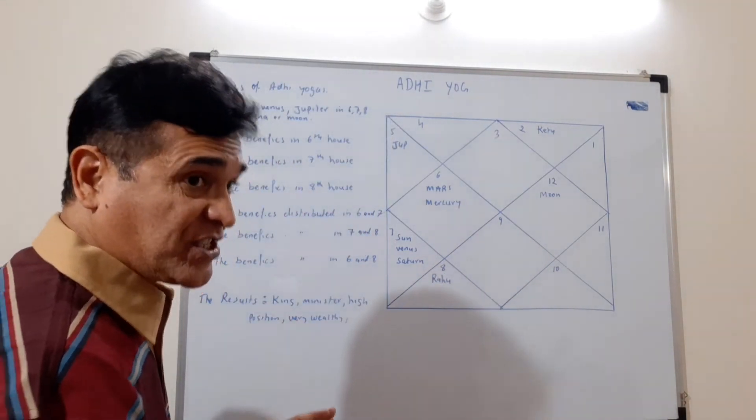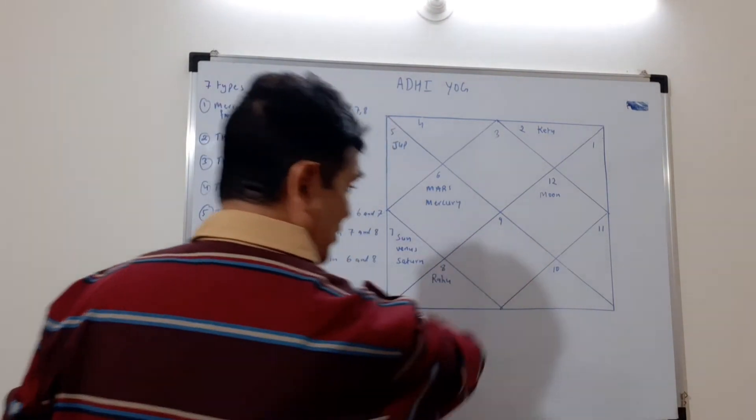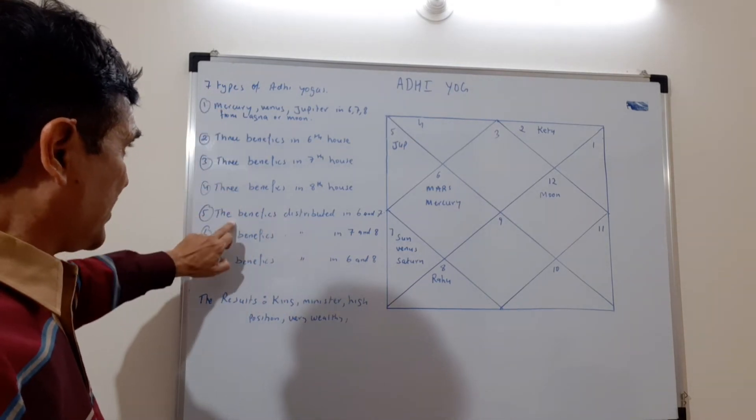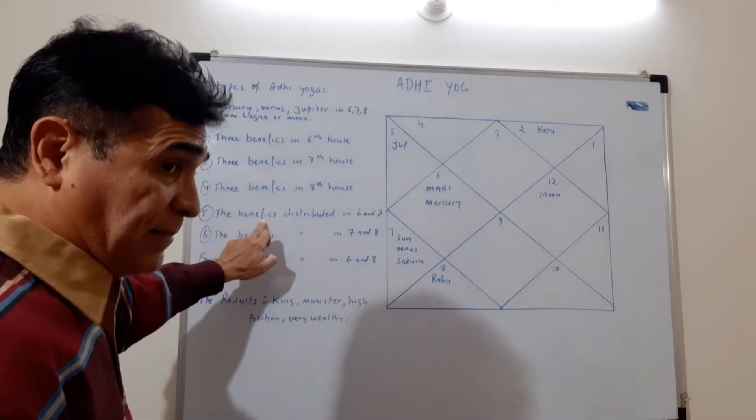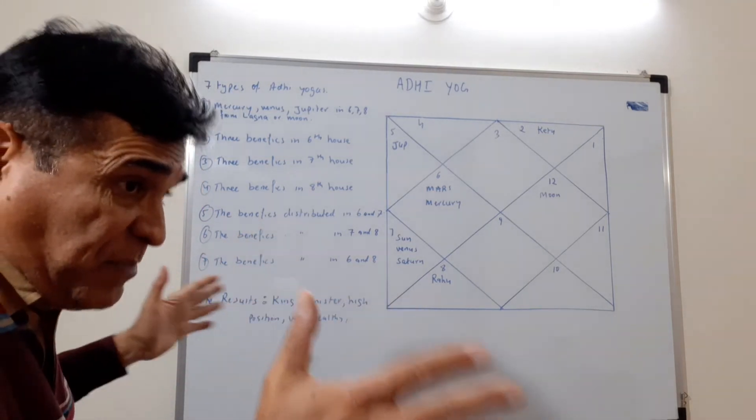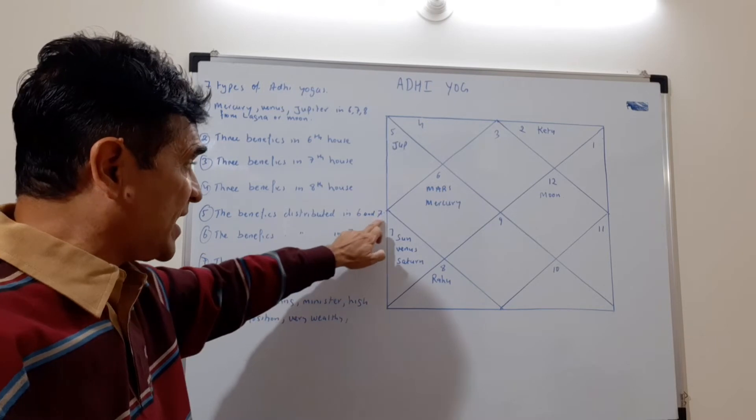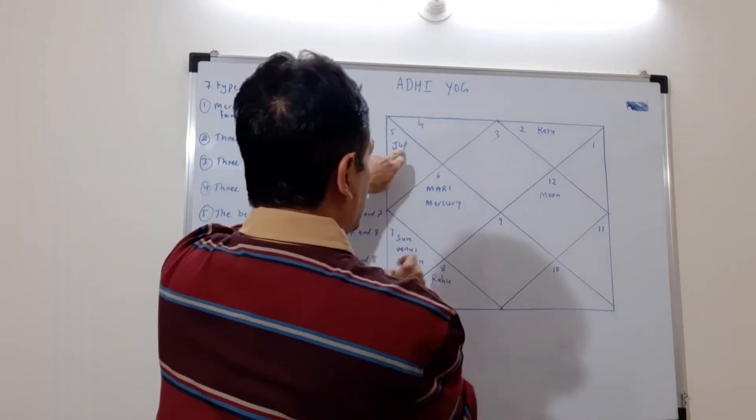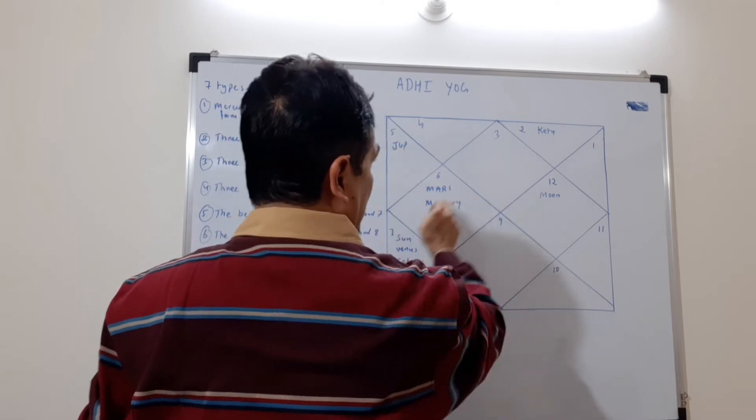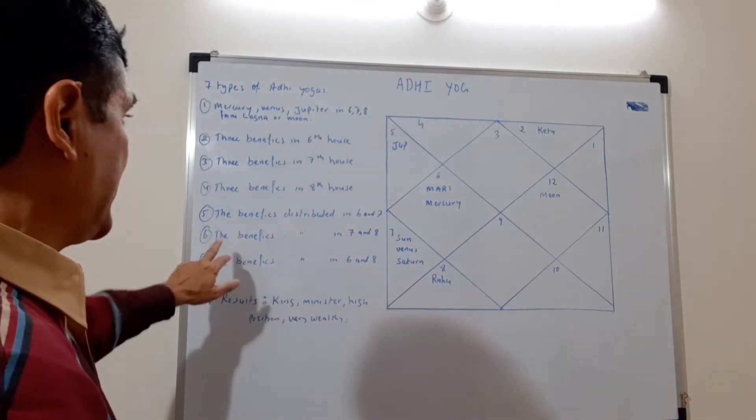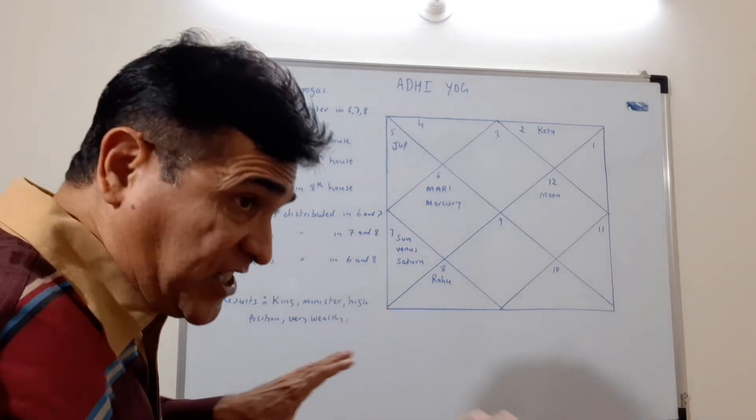The fifth one is where the benefic planets are distributed between the sixth and the seventh house. The sixth type is benefics distributed between seventh and eighth. Moon is here, Lagna is here - please understand.